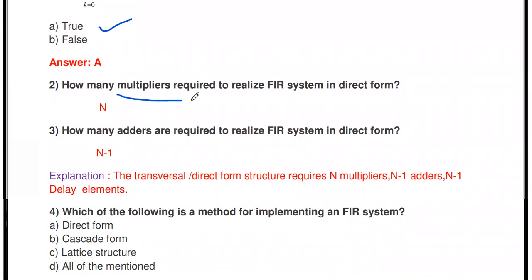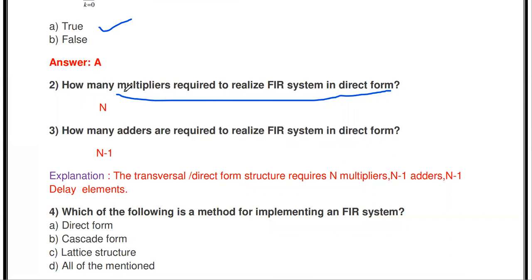How many multipliers are required to realize the FIR system in direct form? If the system has order N, we need N number of multipliers. This is an important question: to realize an FIR system in direct form of order N, N multipliers are required.